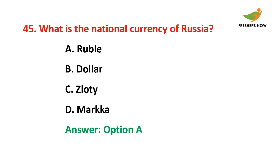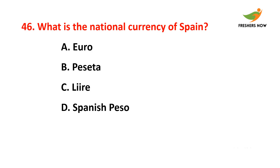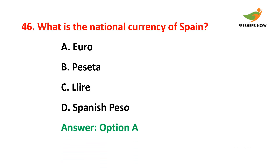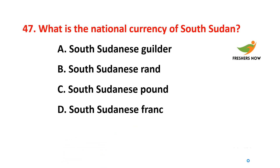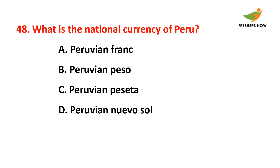Forty-fourth question: What is the national currency of Romania? The answer is option B — Romanian leu. Forty-fifth question: What is the national currency of Russia? The answer is option A — ruble. Forty-sixth question: What is the national currency of Spain? The answer is option A — euro. Forty-seventh question: What is the national currency of South Sudan? The answer is option C — South Sudanese pound.